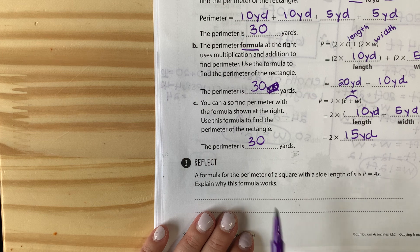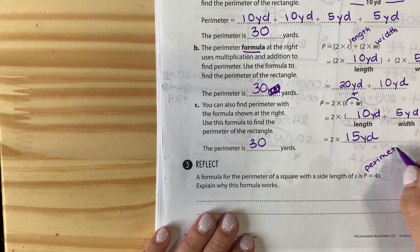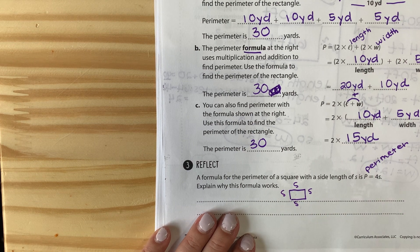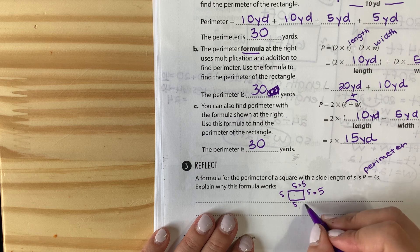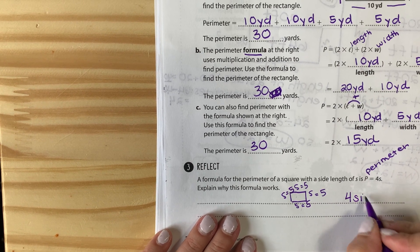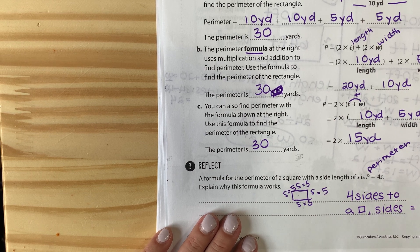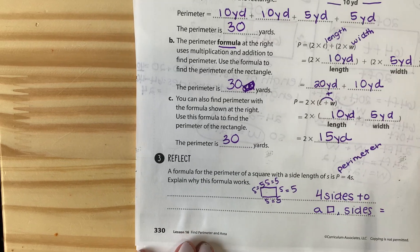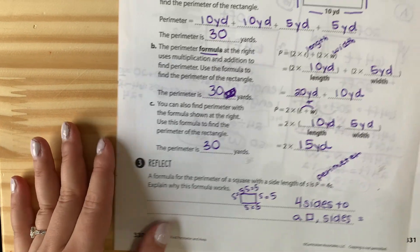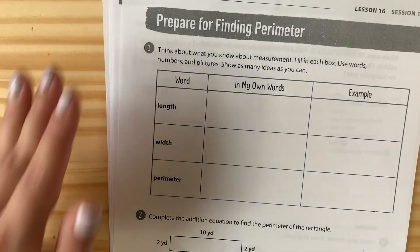A formula for the perimeter of a square with side length S is P = 4S. This works because if we draw a square, each side is equal. So if one side is 5, all sides are 5. The formula uses 4 because there are four sides to a square, and all sides are equal. So if we're ever finding the perimeter of a square and they only give you one side, it's doable because all sides are equal.